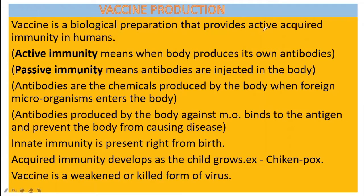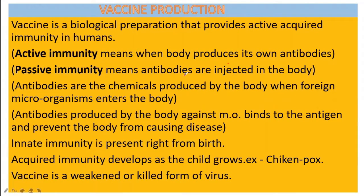I will explain the different types of immunity. Active immunity means when the body produces antibodies automatically — the body produces its own antibodies. That is called active immunity. Passive immunity means when the antibodies are injected inside the body.